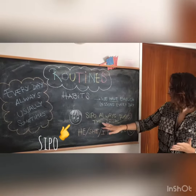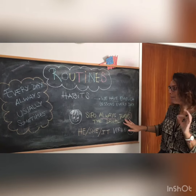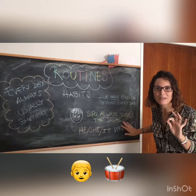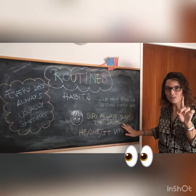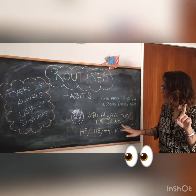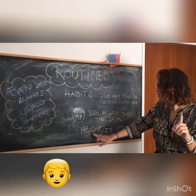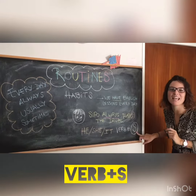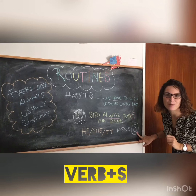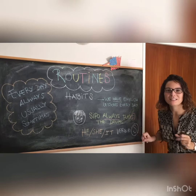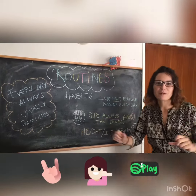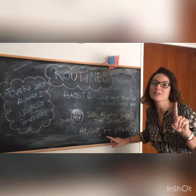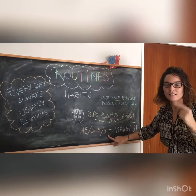Look at Sipo here. Sipo always plays his drums. Always. Ok? Pay attention here. Remember that when the person is he, she or it, we need the S at the end of the verb. Ok? We need the S at the end of the verb. Only when the person is he, she, it. Got it?